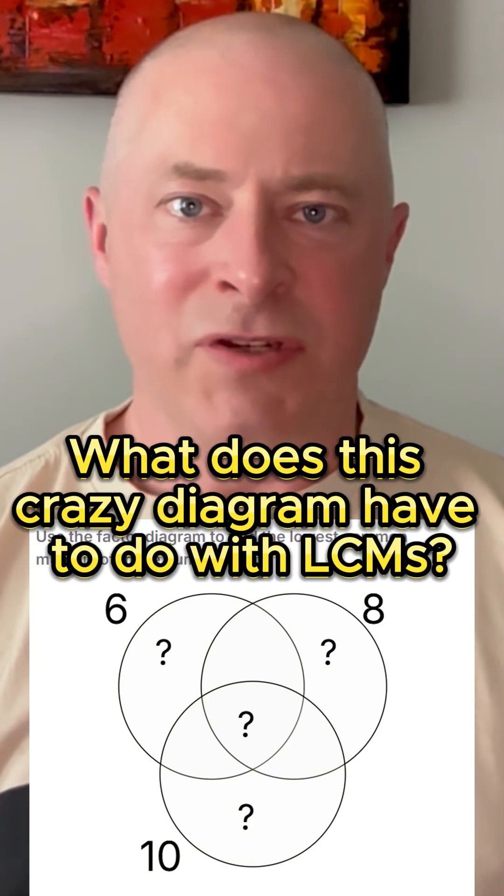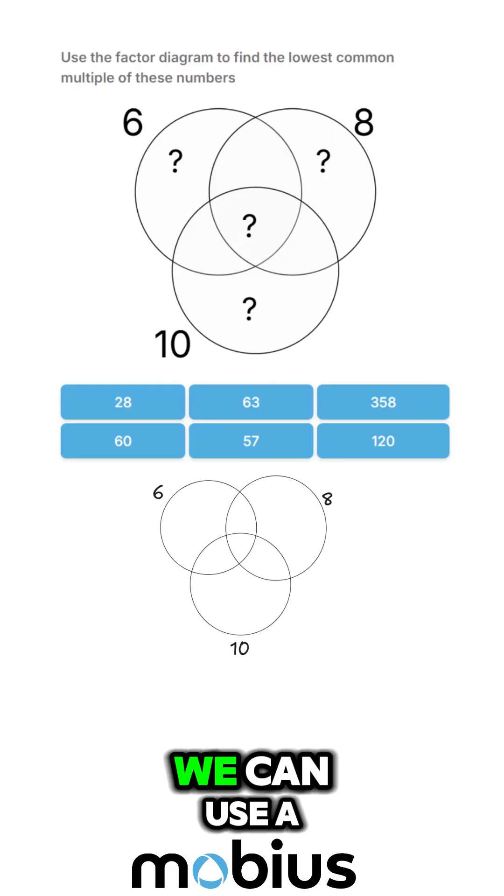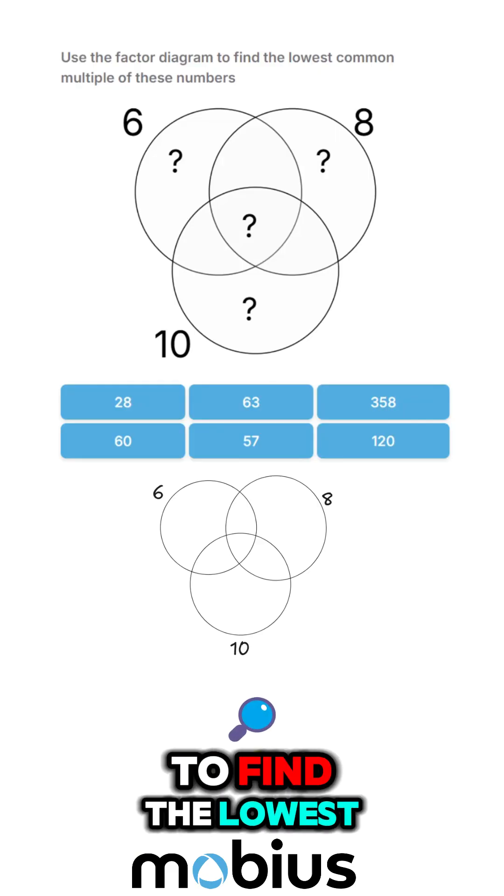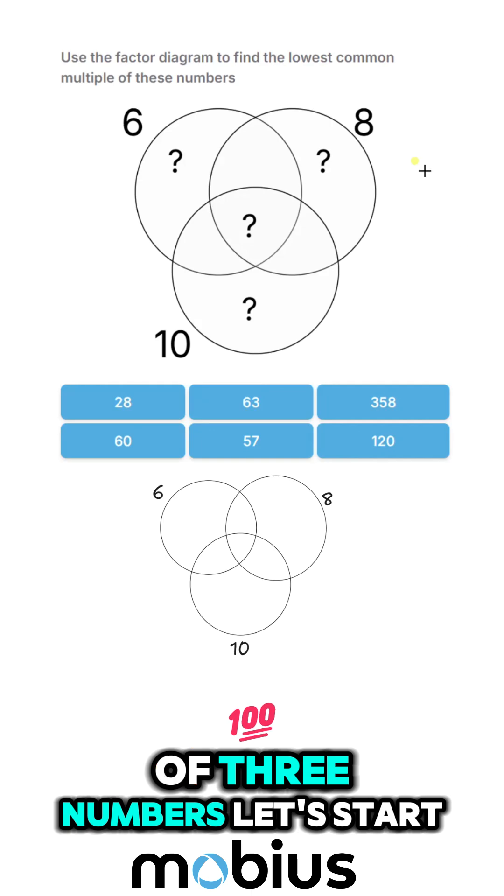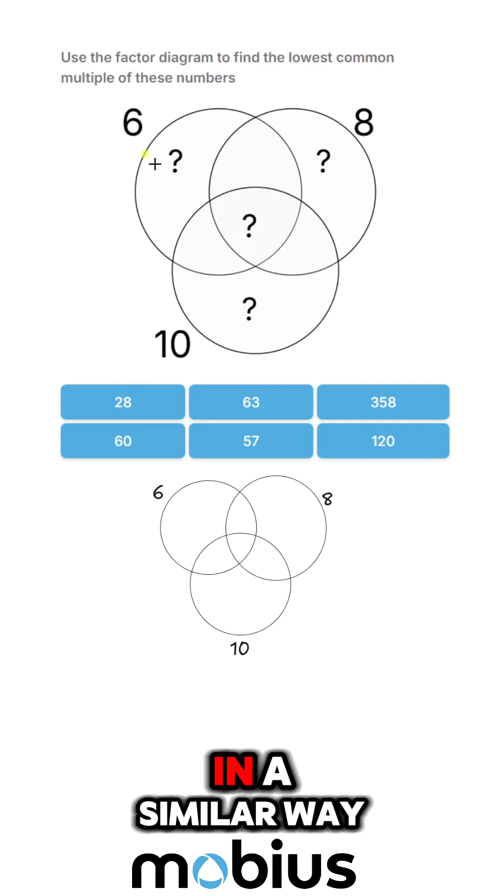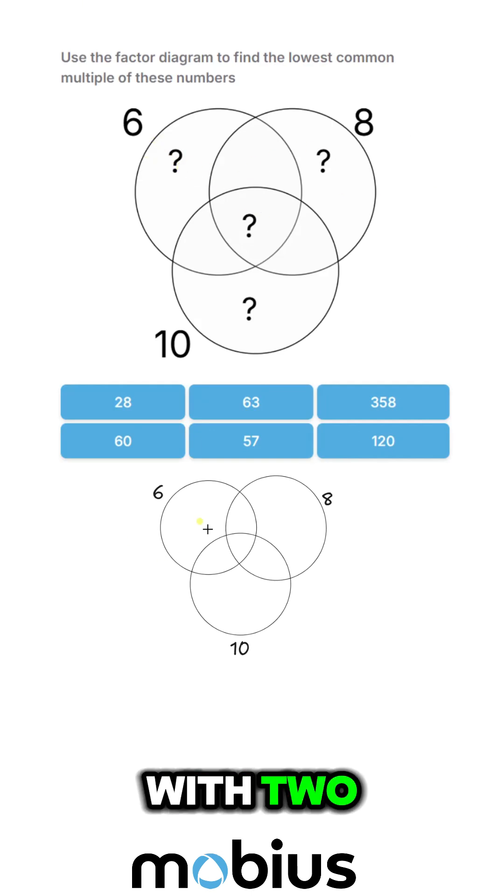What does this crazy diagram have to do with factors and lowest common multiples? We can use a Venn diagram to find the lowest common multiple of three numbers. Let's start in a similar way to what we would do with two.